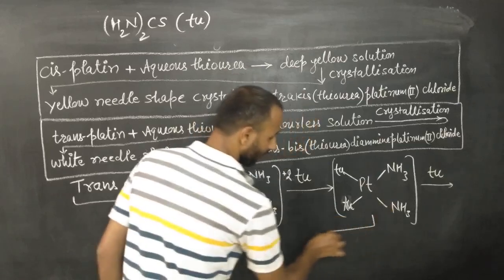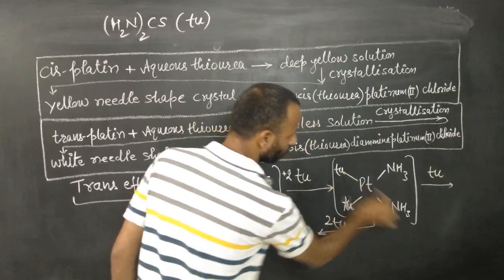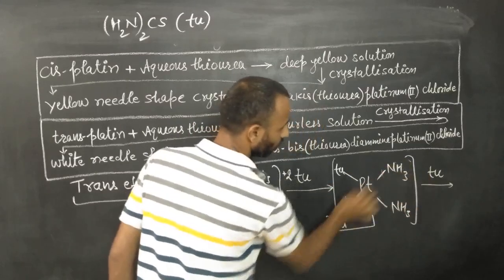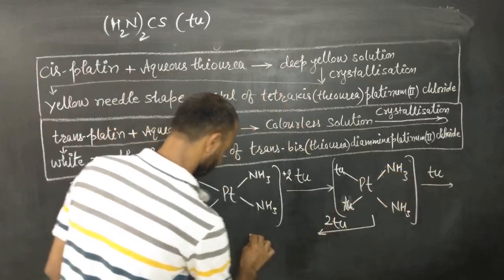That's why in the next step, when we add thiourea, both ammonia are replaced which are trans to thiourea, and we get the final product.